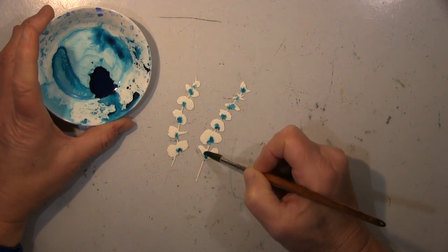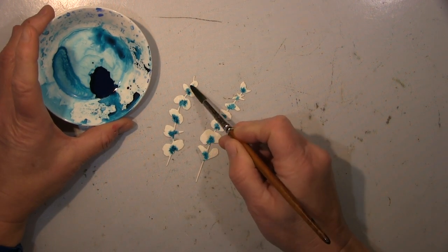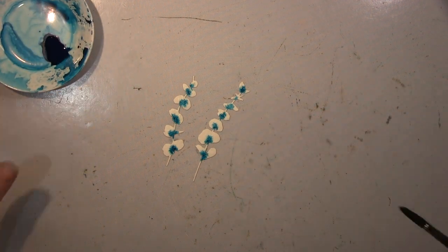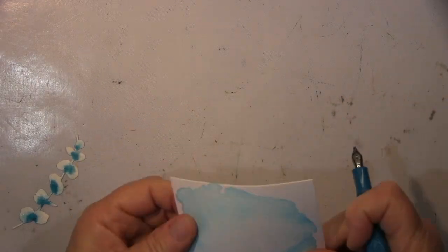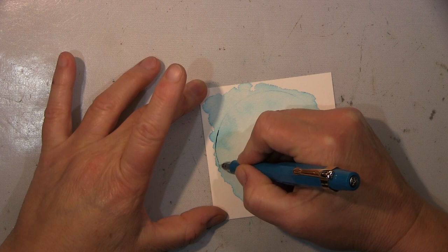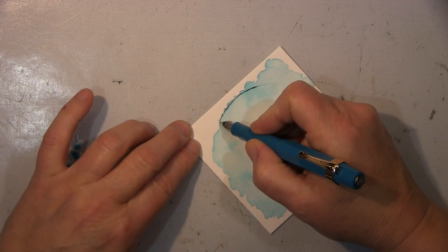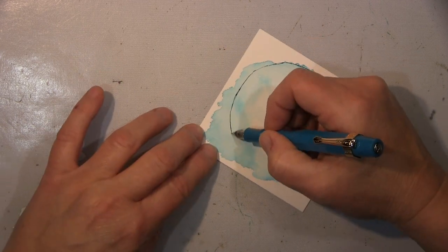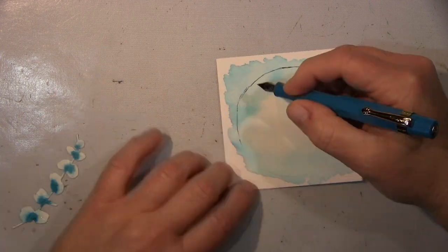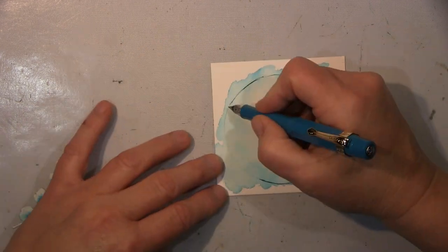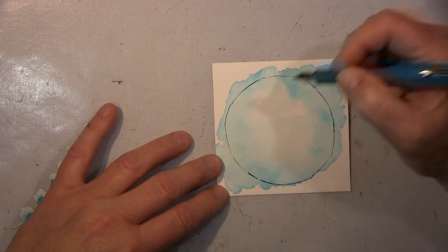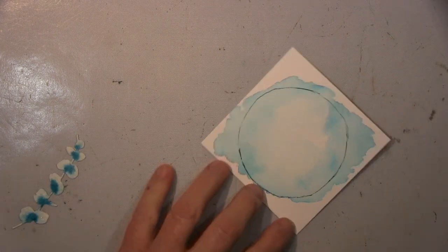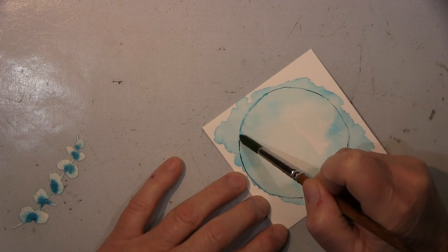Und das finde ich einfach immer, hat einen schönen Effekt, habe das schön heraus oder verblendet, so dass ich so ein bisschen Farbe habe. Was aber immer mal wieder passieren kann, ihr seht das hier, ich habe meinen Kreis verloren, nicht ganz. Also bin ich jetzt nochmal mit dem Füller drüber und werde noch ein bisschen mit Wasser arbeiten und einem Pinsel hier.